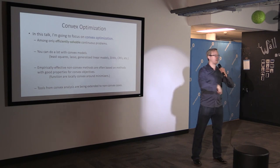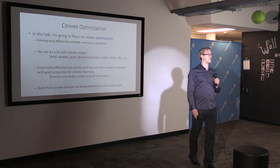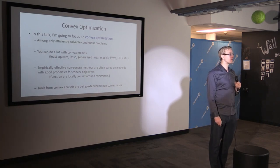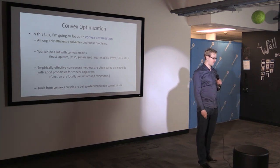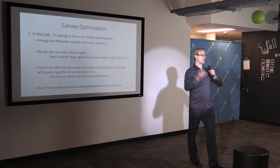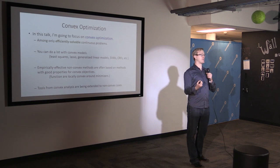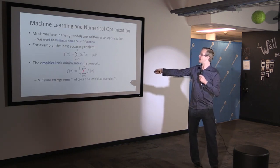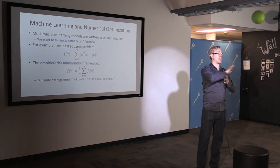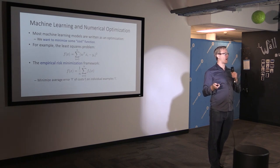Does anyone want to ask a question? [Audience: How do you know when you start with some data that the function you're fitting has a convex property?] How do you know if a function is convex? There are rules you can go through to prove your function is convex. Convexity is not a property of your dataset — it's a property of the particular cost function f_i that you pick. SVMs are always convex whether you're distinguishing cats from dogs or spam from not spam, so you usually know beforehand whether your function is convex.